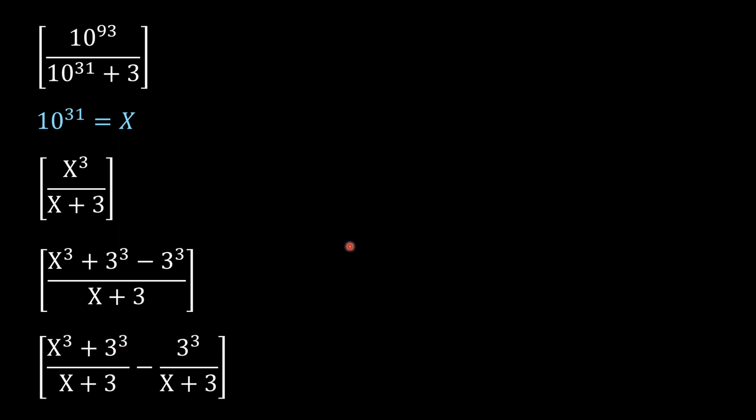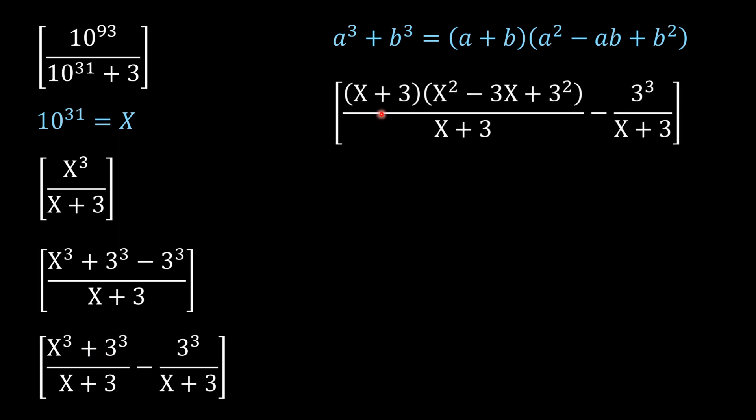We know that a³ plus b³ is equal to (a + b)(a² - ab + b²). You can see that pattern here: X³ plus 3³. Let's use that formula.